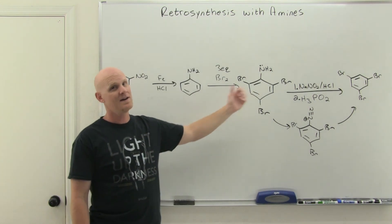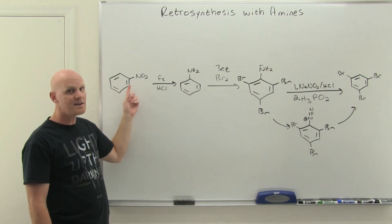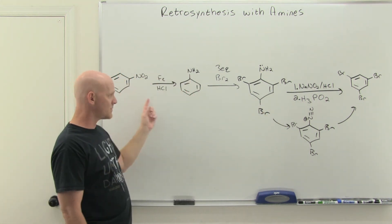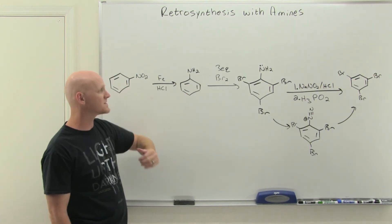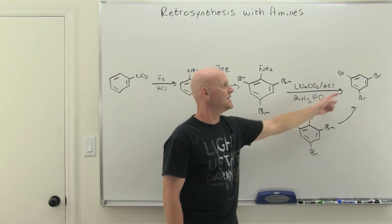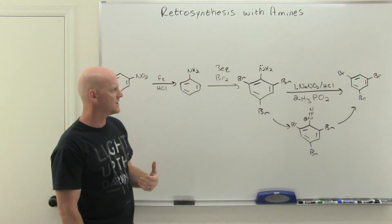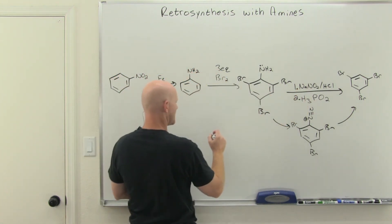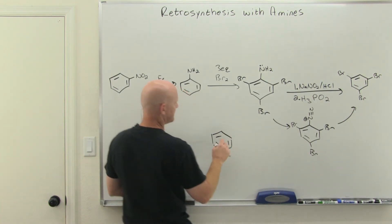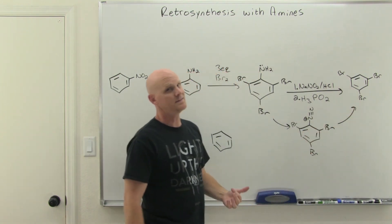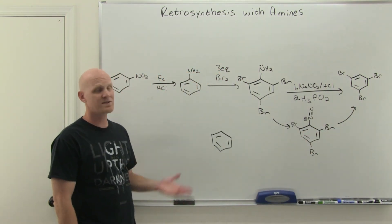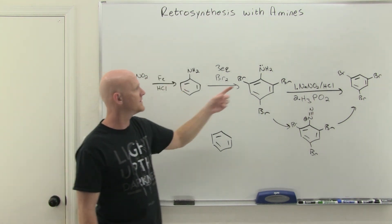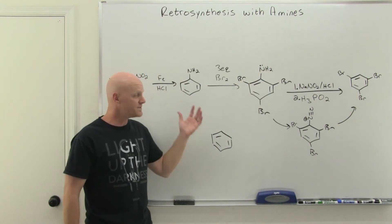The big key in this example is realizing the NO2 is not in the product and you only have one way to remove it: through the Sandmeyer reaction replacing it with hydrogen, which requires going through aniline. The critical insight is that you must brominate before removing the amine group — if you removed it first to get plain benzene, there's no good way to install three bromines in the 1,3,5 pattern. But as long as you brominate while the amine is still there, it directs perfectly to all three desired positions.